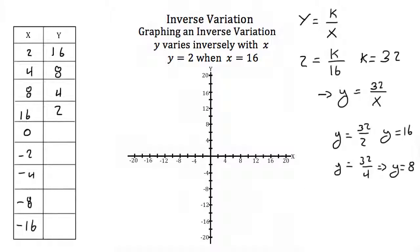For x equals 0, we'd have y equals 32 over 0. Since you can't divide by zero, this is undefined and we don't have a y value.